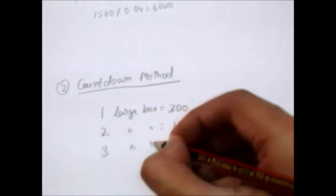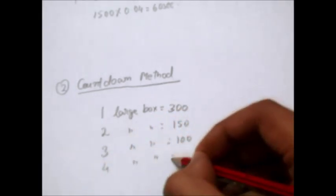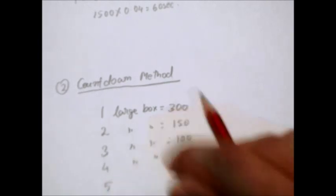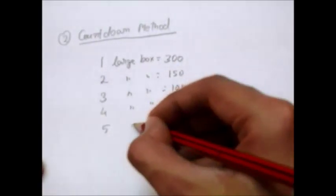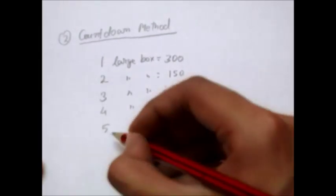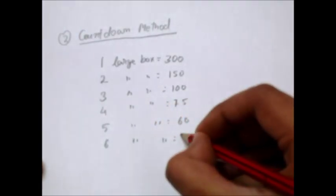If three, then 100. If four, then 75. If five, then 60. And if six, it will be 50.